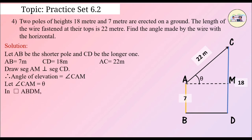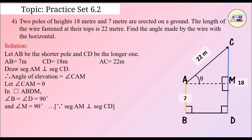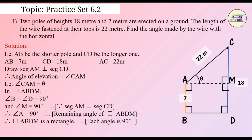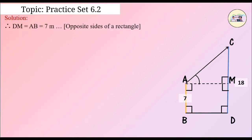In quadrilateral ABDM, angle B is equal to angle D is equal to 90 degrees, since the foot of the poles are perpendicular to the ground, and angle M is equal to 90 degrees since segment AM is perpendicular to segment CD. Therefore, angle A is equal to 90 degrees by the remaining angles of quadrilateral ABDM. Therefore, quadrilateral ABDM is a rectangle, since each angle is 90 degrees. Therefore, DM is equal to AB is equal to 7 meters.